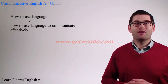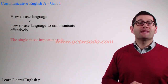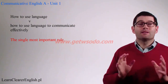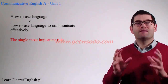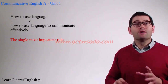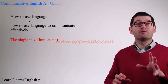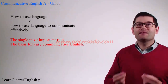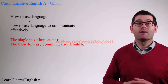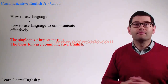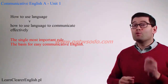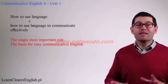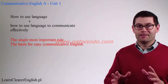In this first unit, we're going to have a look at the single most important rule that you have to remember to communicate effectively. This rule, which the other rules continually refer to, is the basis for easy communicative English. Really. If there's one rule — although I'm assuming you want to know the others — this is it.